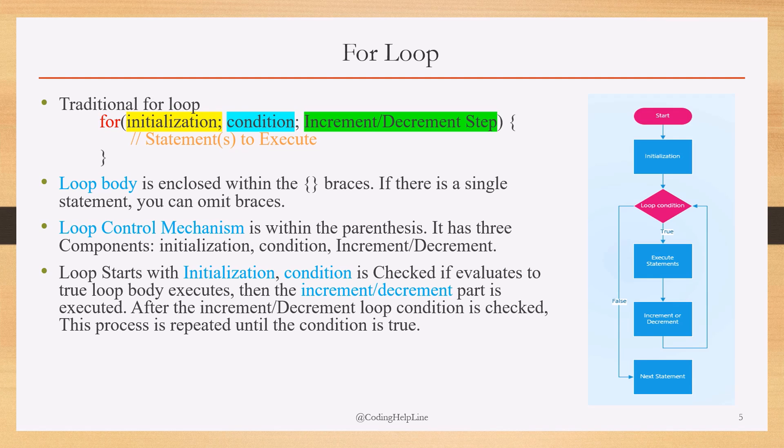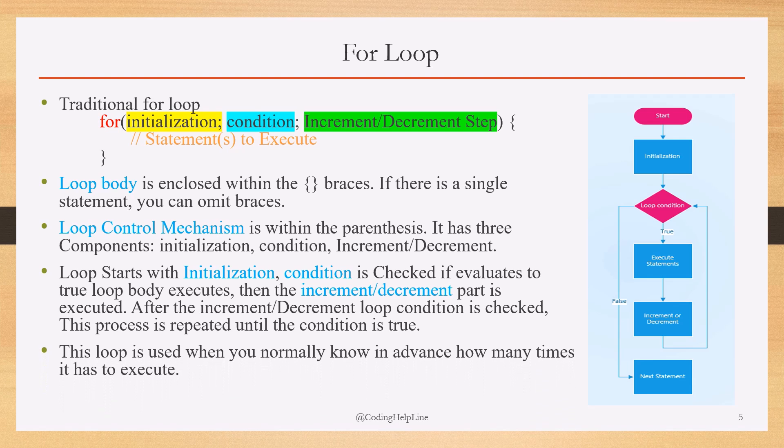The loop starts with initialization, condition is checked. If evaluated true, the loop body executes, then the increment/decrement part executes. After that, the loop condition is checked again. This process repeats until the condition is false. This loop is used when you normally know in advance how many times it has to execute, which is why we also call it the counting for loop.